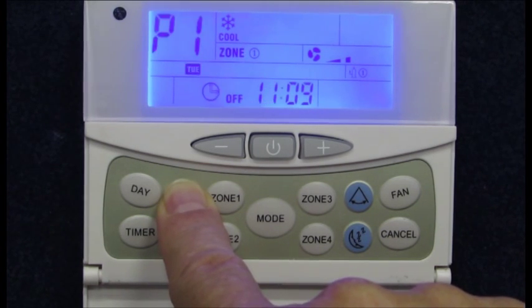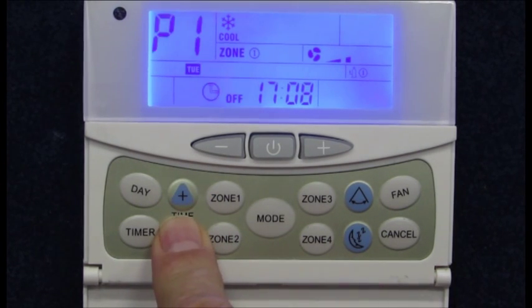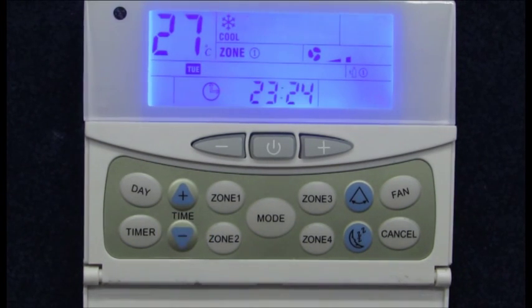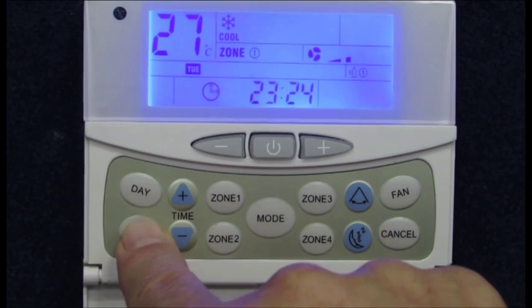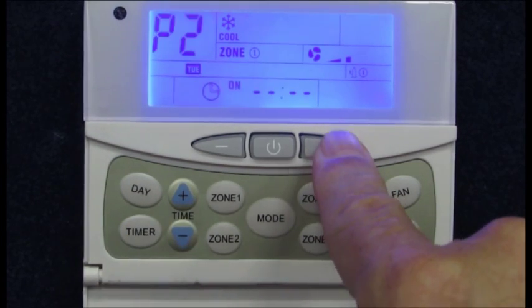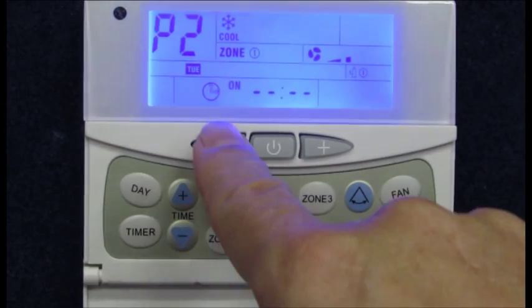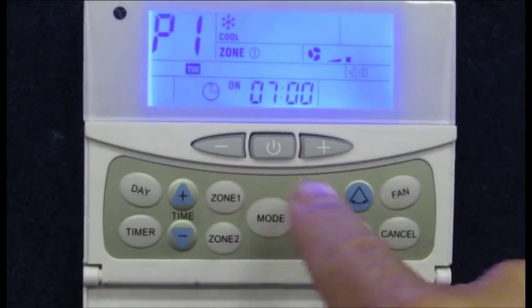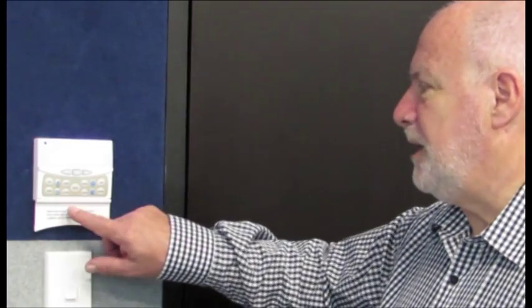Once you have set the on and off times for period one, if you want to set times for period two, use the main plus and minus buttons. These buttons will move you back and forth between periods one and two, which appear on the display as P1 and P2. Once the first day is set, now you can progress to the next day by pressing the day button. Repeat this procedure until all the days required to be set have been set. Make a mistake? Press cancel at any time. Hold the cancel button down for five seconds and all the timer settings will be cancelled and cleared.